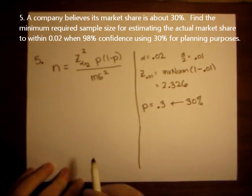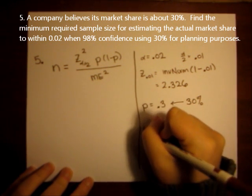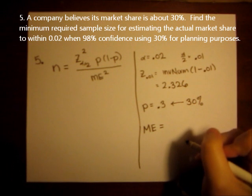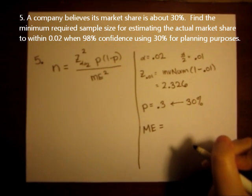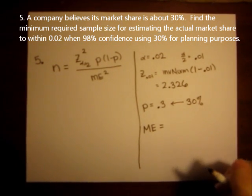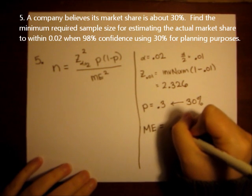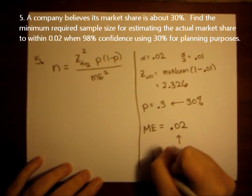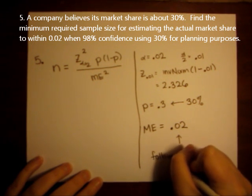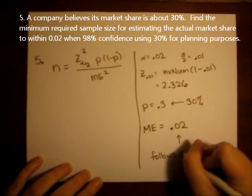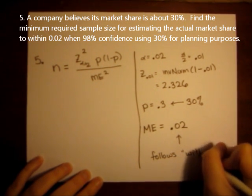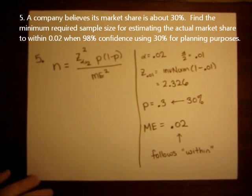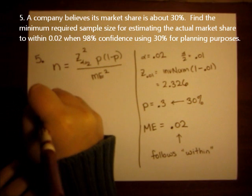The last part of the formula that I need before I plug in is the desired margin of error. So when I read the question carefully, it says I want to estimate within .02. The margin of error usually is going to be what follows the word within. So the margin of error is .02.